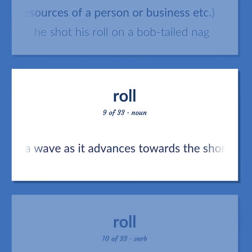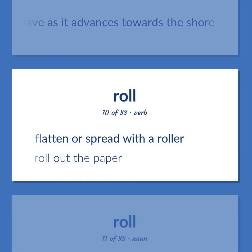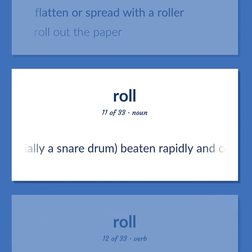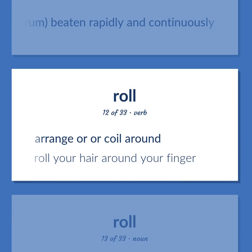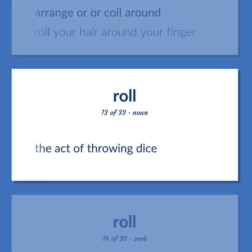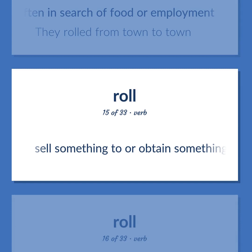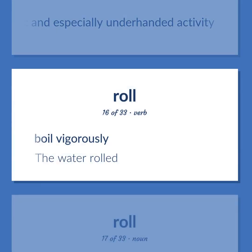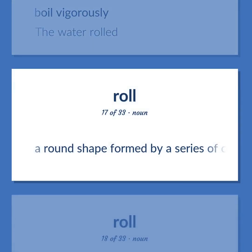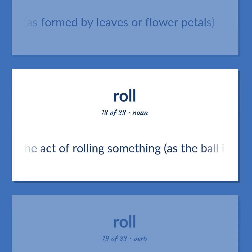Roll: A long heavy sea wave as it advances towards the shore. Flatten or spread with a roller — roll out the paper. The sound of a drum, especially a snare drum, beaten rapidly and continuously. Arrange or coil around — roll your hair around your finger. The act of throwing dice. Move about aimlessly or without any destination, often in search of food or employment — they rolled from town to town. Sell something to or obtain something from by energetic and especially underhanded activity. Boil vigorously — the water rolled. A round shape formed by a series of concentric circles, as formed by leaves or flower petals. The act of rolling something, as the ball in bowling.